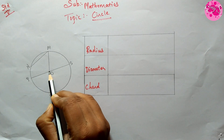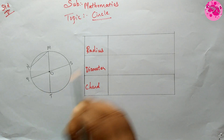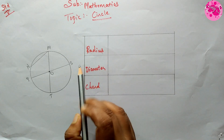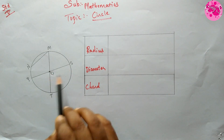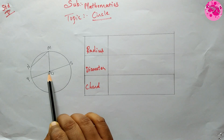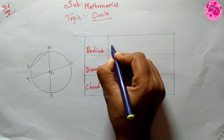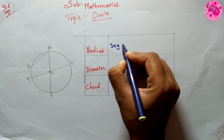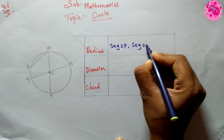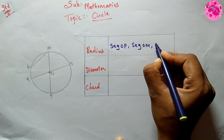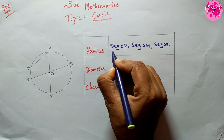The center point is O. We have to find the radius first. The segment joining the center to any point on the circle is called the radius. Since the center point is O, the radii are: segment OP, segment OM, segment OS, and segment OT.